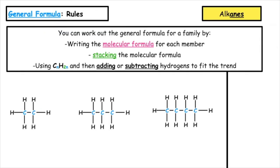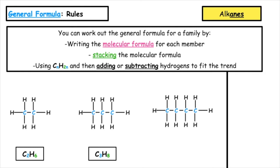To work out the general formula for a family, we have a couple of rules to follow. You can work out the general formula by firstly writing the molecular formula for each member. So for the first one, we have C2H6, C3H8, and C4H10.